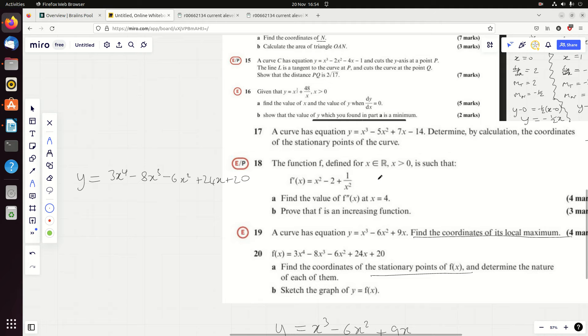We've been doing this recently, haven't we? So we differentiate and we get 12x cubed minus 24x squared minus 12x plus 24. Now we're going to find the coordinates of the stationary points of f(x) and determine the nature of each of them. So we're going to set it equal to 0.